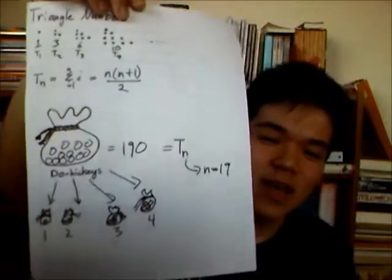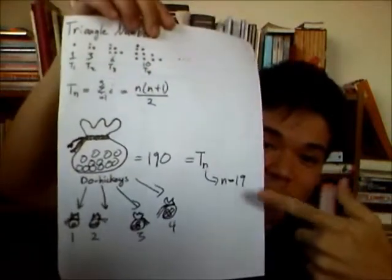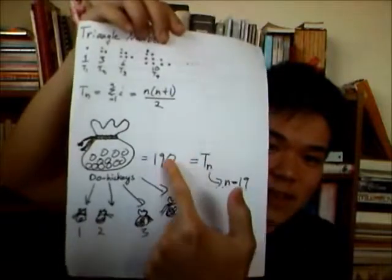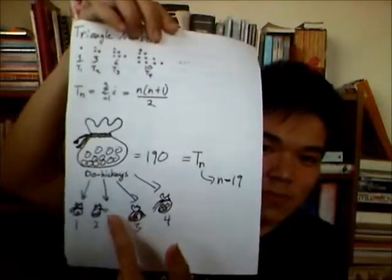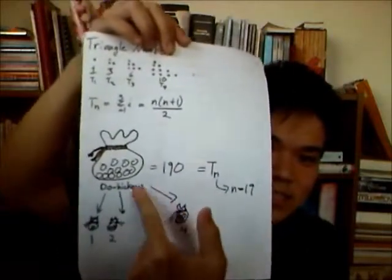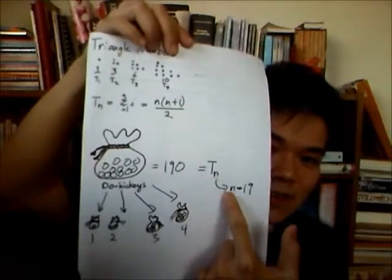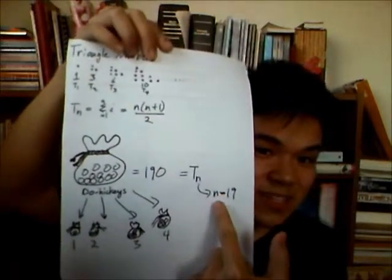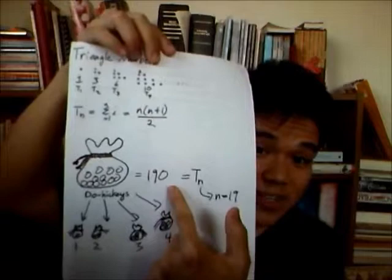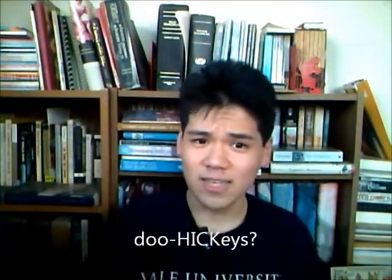If we have 190 doohickeys and we have to divide them up amongst a number of bags, this is just finding the 19th term in our triangle number sequence — T19 — which gives us 190. So the answer to your question is that if we have 190 doohickeys in a single bag and we want to divide them up into a bunch of different bags, we will need 19 bags.